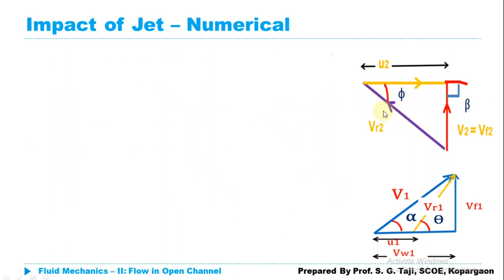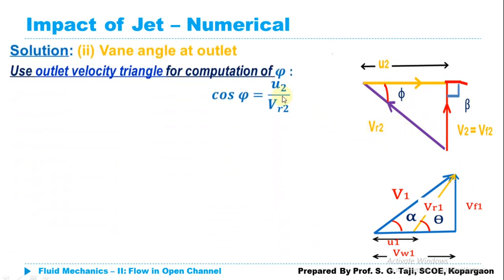For phi, we use the outlet velocity triangle. Since beta = 90°, no sine rule is needed — we can use trigonometry directly. With beta = 90°, cos(φ) = u2 / Vr2. Since Vr1 = Vr2, we first compute Vr1 from the inlet velocity triangle using: sin(θ) = Vf1 / Vr1, so Vr1 = Vf1 / sin(θ).